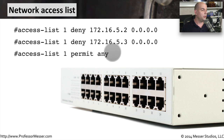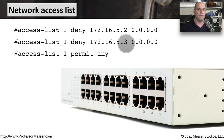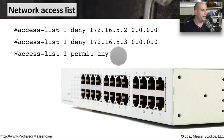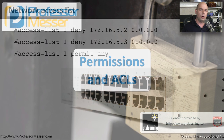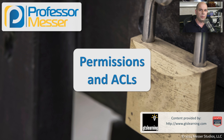Which means if you don't match 172.16.5.2 or 172.16.5.3, then anybody else is allowed access through the network. These are very simple access lists, but they give you an idea of how you can use this top-down approach to add different rules that allow or disallow access to your network or operating system.